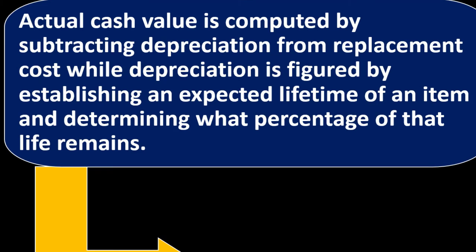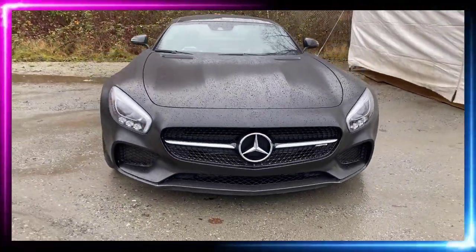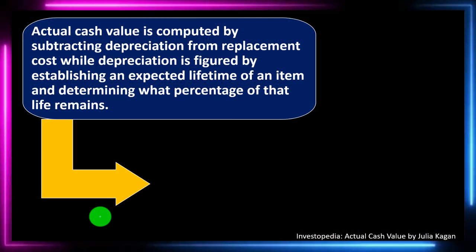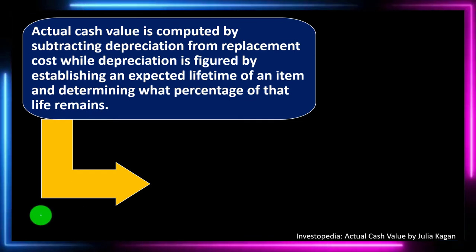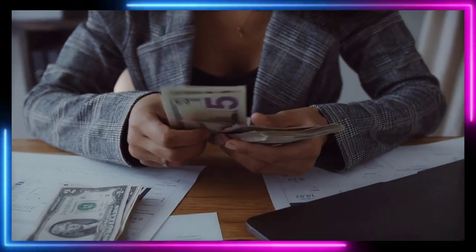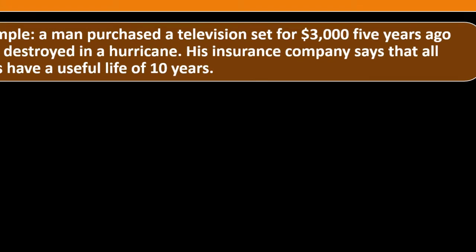Actual cash value is computed by subtracting depreciation from replacement cost, while depreciation is figured by establishing an expected lifetime of an item and determining what percentage of that life remains. The standard method is straight-line depreciation: what's the useful life of the car, how long would it last, and how old was it — so you can take the cost and subtract out the depreciation. This percentage multiplied by the replacement cost provides the actual cash value.